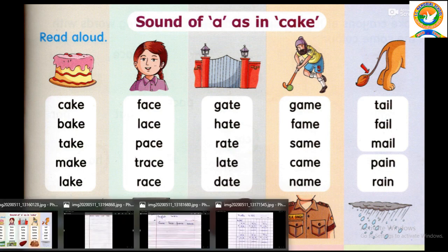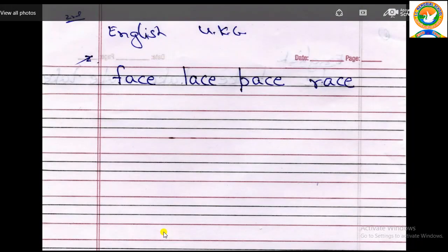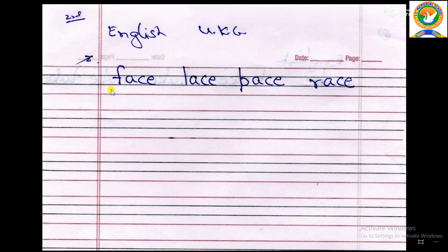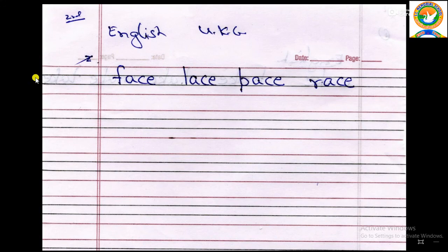Iska homework deklo. Homework deklo, is mein second row wala hai — Face, Lace, Pace, Race. Spelling part likho ge, pura ek page likho ge. Niche se upar tak F-A-C-E Face, L-A-C-E Lace, P-A-C-E Pace, R-A-C-E Race. Bol bol ke likho ge, ok?